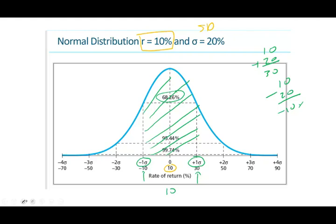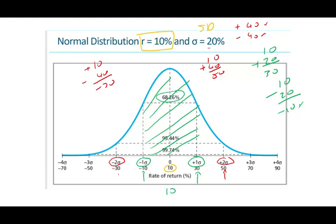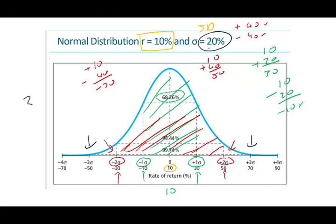What happens if we go to two standard deviations? The standard deviation is 20, so two standard deviations is plus or minus 40%. Adding to the mean of 10%: 10 plus 40 = 50%, and 10 minus 40 = negative 30%. Within those two standard deviations, we have approximately 95% of the return. And within three standard deviations, three times 20 is 60%, so 10 plus 60 = 70%, encompassing 99% of returns.